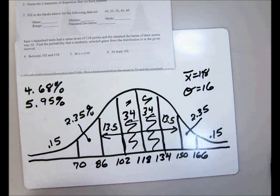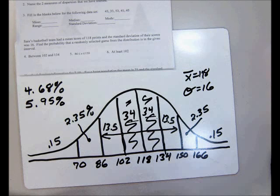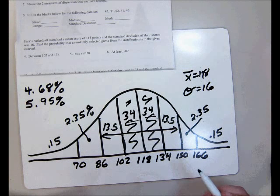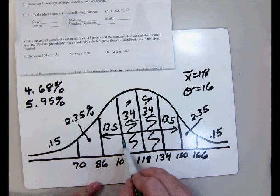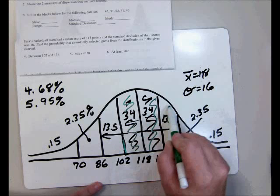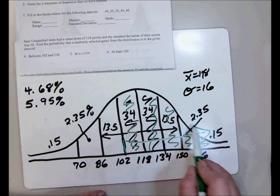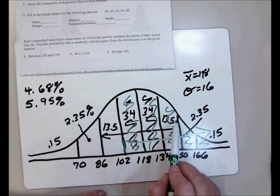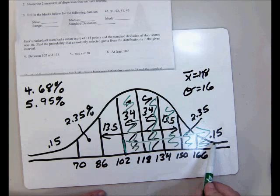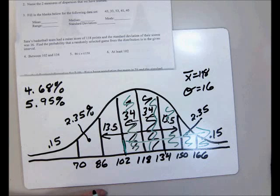And then the last one, at least 102, means at least means that's the smallest amount. So it's 102 or more. So we start at 102 and we shade everything to the right of that. And then we add all of these percentages. 34 plus 34 plus all of these. Or you can just say halfway is 50 and then add 34. But you should get 84%.